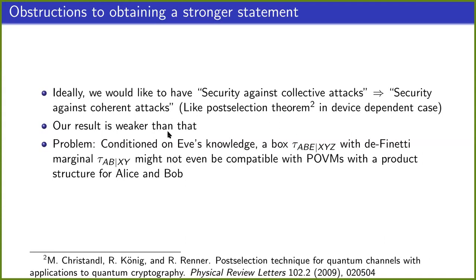And one problem that arises when trying to strengthen it is that if we condition this extended box tau_abeXYZ on the knowledge of Eve, then this conditioned box might first of all not be a de Finetti box anymore, but second of all, it might not even have a local structure on the measurements on Alice and Bob's side anymore, which significantly complicates further arguments.